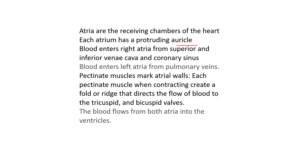Blood enters the right atrium from the superior and inferior vena cava and the coronary sinus. Blood enters the left atria from the pulmonary veins. So you have two types of blood coming to the atria: deoxygenated blood to the right, and oxygenated blood to the left. Notice we call it a pulmonary vein, but it carries oxygenated blood from the lungs.